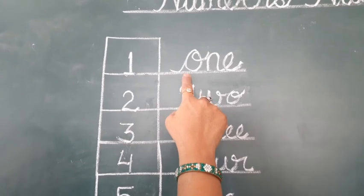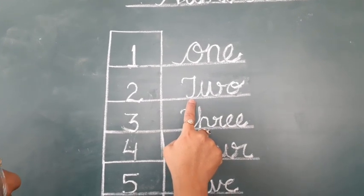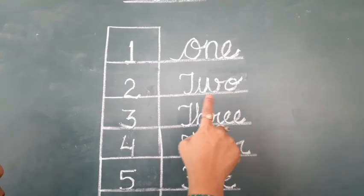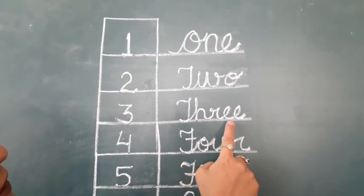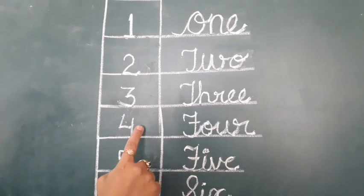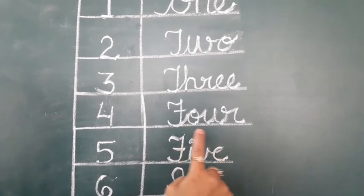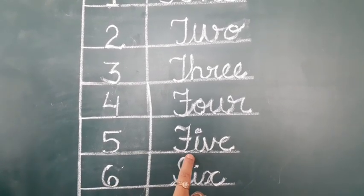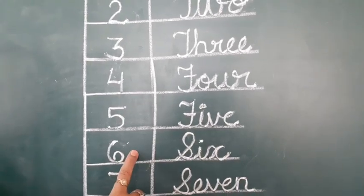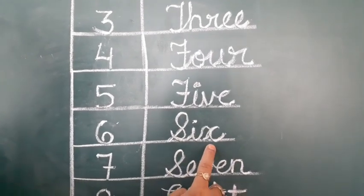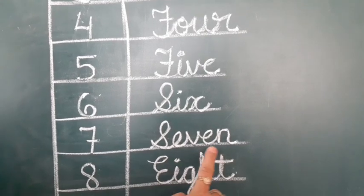1 ONE 1, 2 TWO 2, 3 THREE 3, 4 FOUR 4, 5 FIVE 5, 6 SIX 6, 7 SEVEN 7.